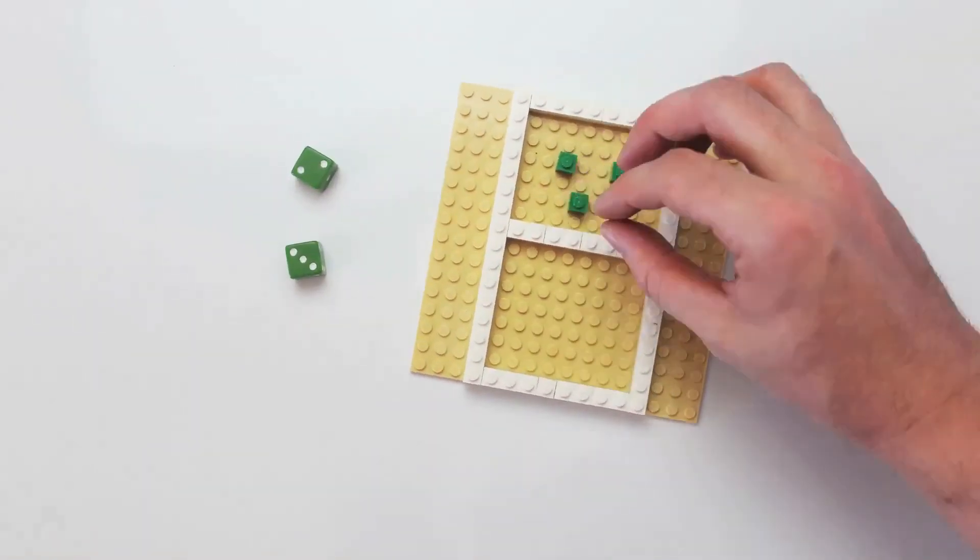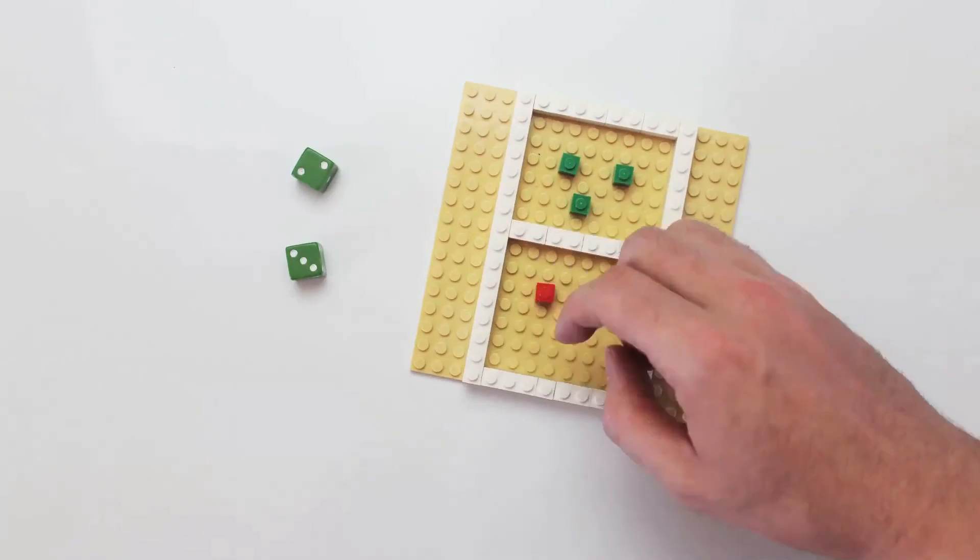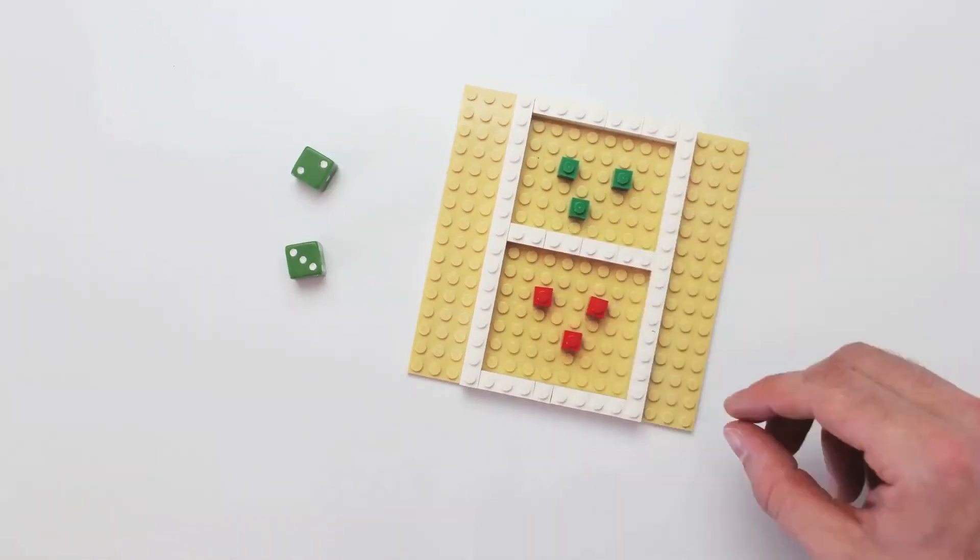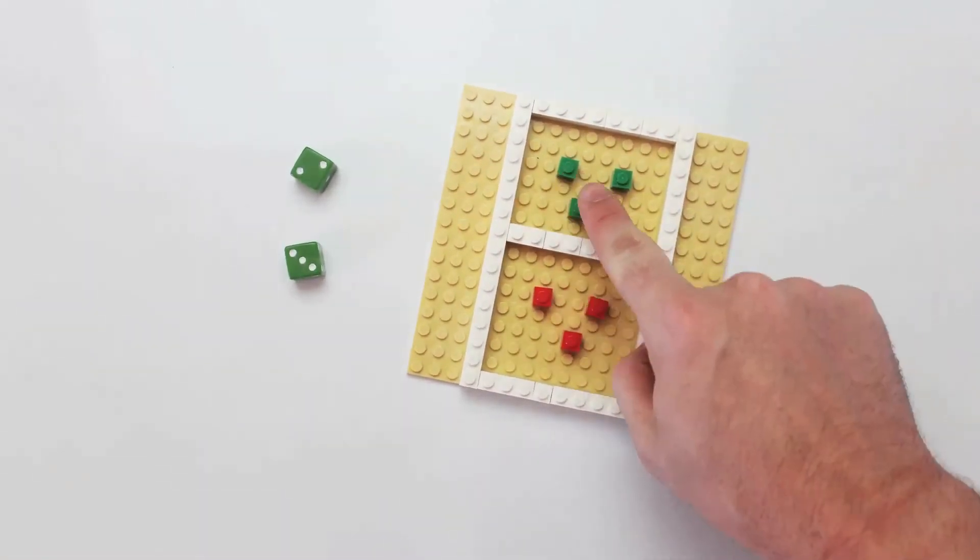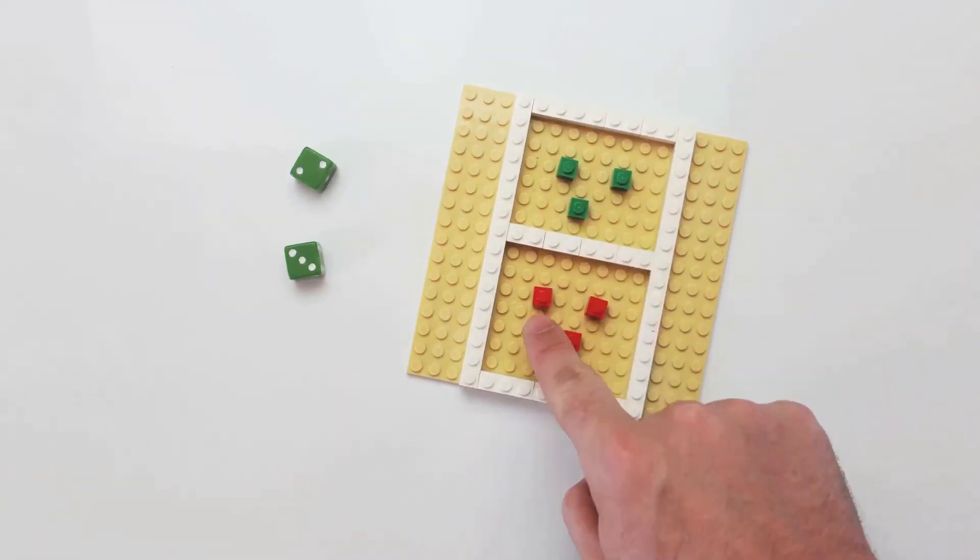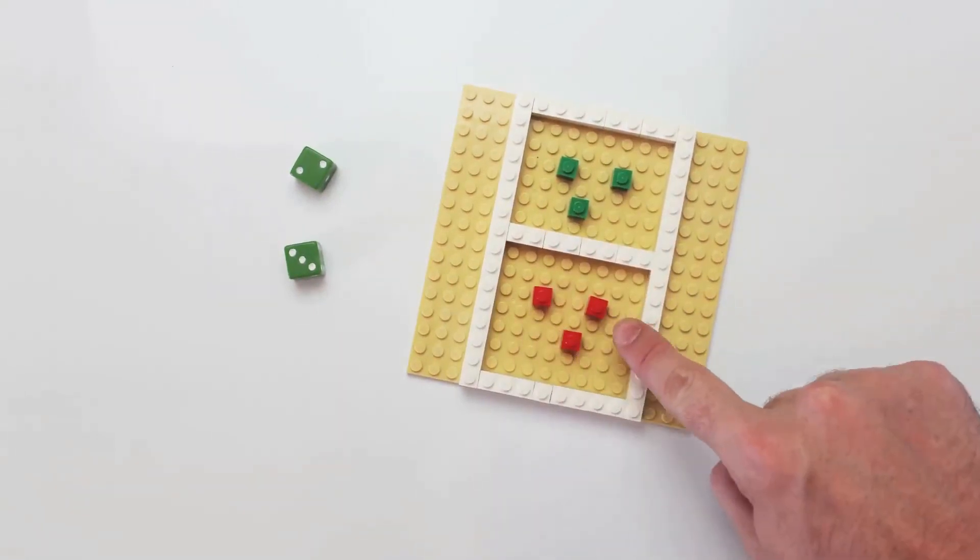Player 1 models the multiplicand of 3 by placing 3 1x1 bricks in each block. Player 1 counts the total number of studs in the model to find the solution to the problem, which is 6.